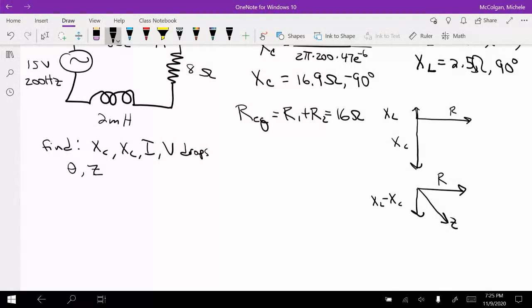So now I can find Z. So my Z is equal to the square root of REQ squared plus (XL minus XC) squared, the magnitude squared.